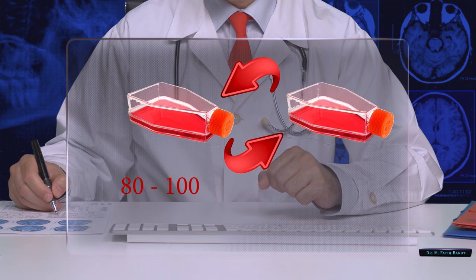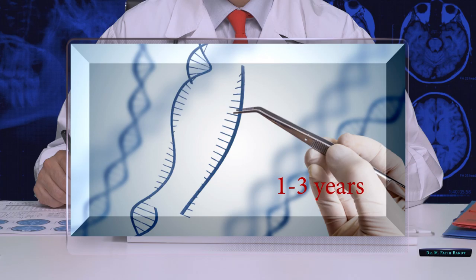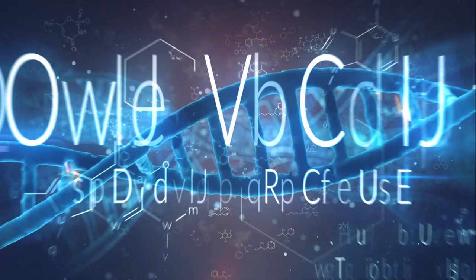The thing is, conventional attenuation process needs at least 80 to 100 cell culture passages and it may take years to complete. Genetical engineering of the vaccine virus also takes years. However, in this epidemic, we need a much faster approach.